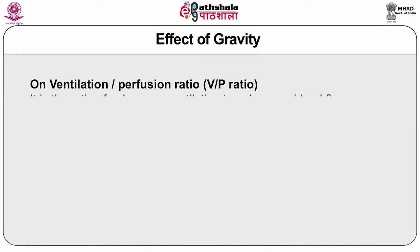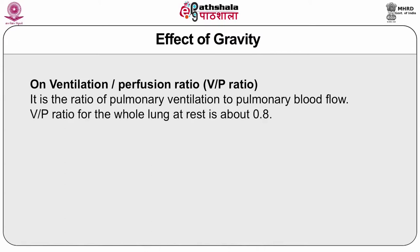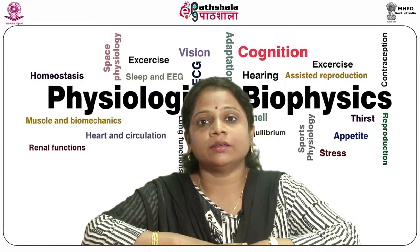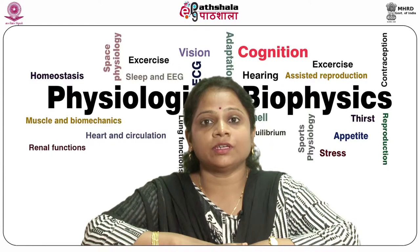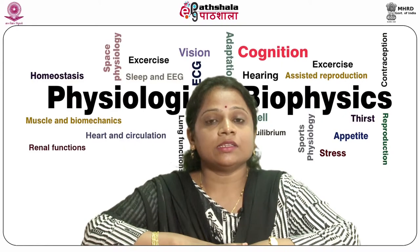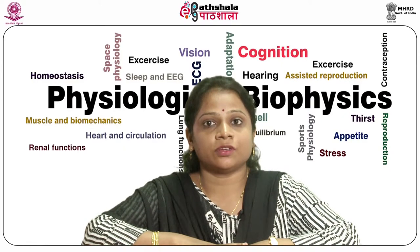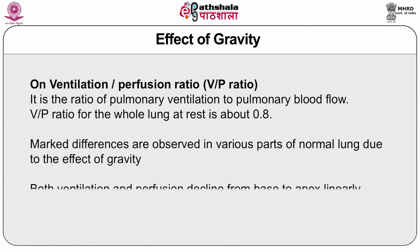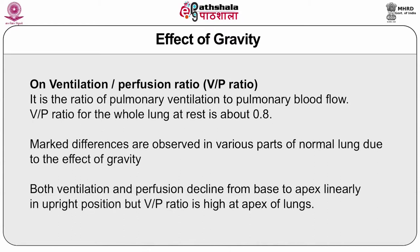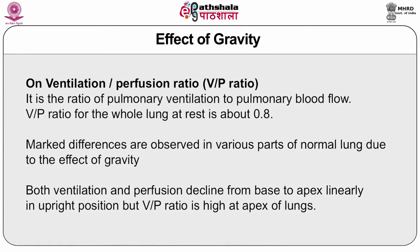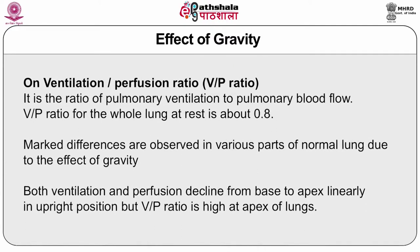The ventilation-perfusion ratio is the ratio of pulmonary ventilation to pulmonary blood flow, also called the VP ratio. The ventilation-perfusion ratio for the whole lung at rest is about 0.8. Both ventilation and perfusion decline from base to apex linearly in the upright position, but the VP ratio is high at the apex of the lungs.